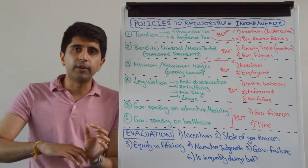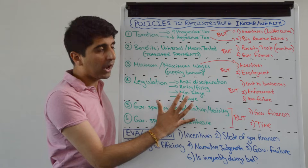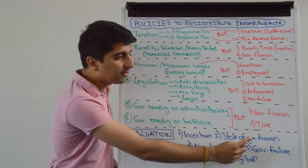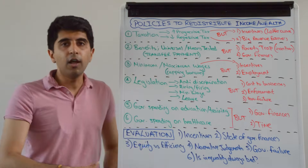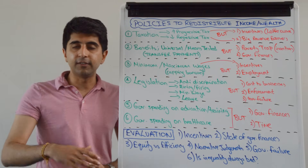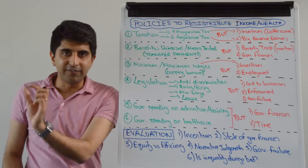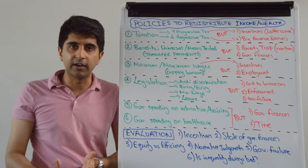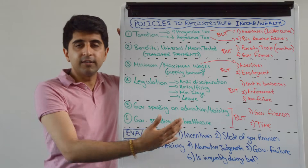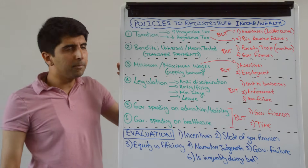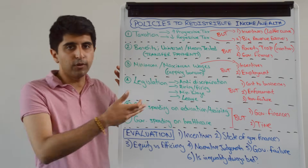Let's now look at some key evaluation points that will feature in essays where you want to talk about redistributing income and wealth. Two points we've focused on throughout our discussion are the incentives impact and the state of government finances. You've always got to worry about the perverse incentives that some of these policies may promote, and a lot of these policies are costly — whether governments can actually afford them given the state of their finances is something you need to consider. This is also about weighing equity against efficiency. It's hard to argue against any of these policies on the equity front — they are all very fair policies you might argue. But are they all efficient? Consider the distortion of incentives — very inefficient in terms of what the end outcomes might be. Minimum and maximum wages distort efficient labour market outcomes and lead to significant inefficiency depending on the level of the caps or the minimum wage.